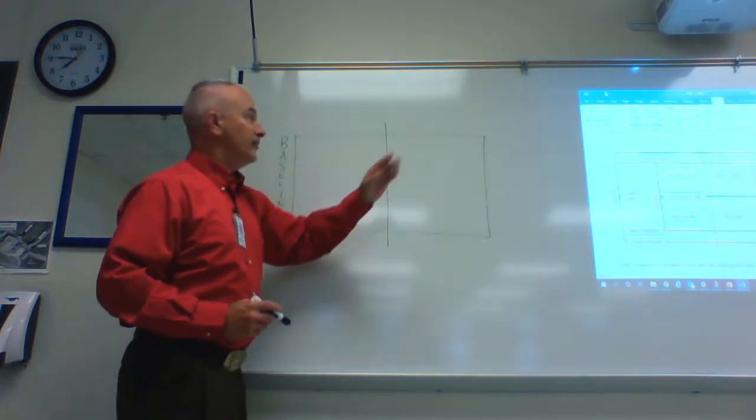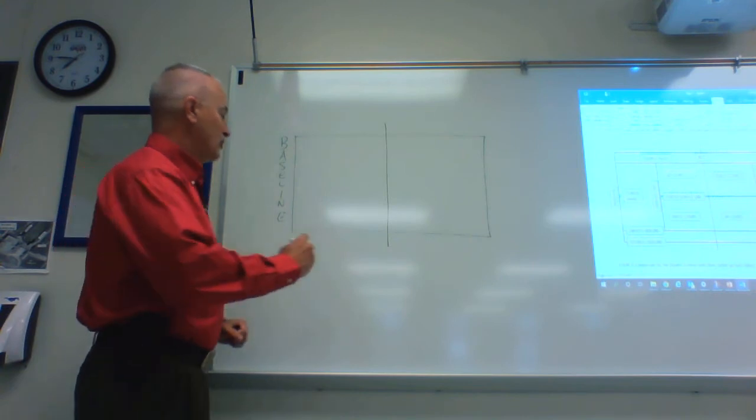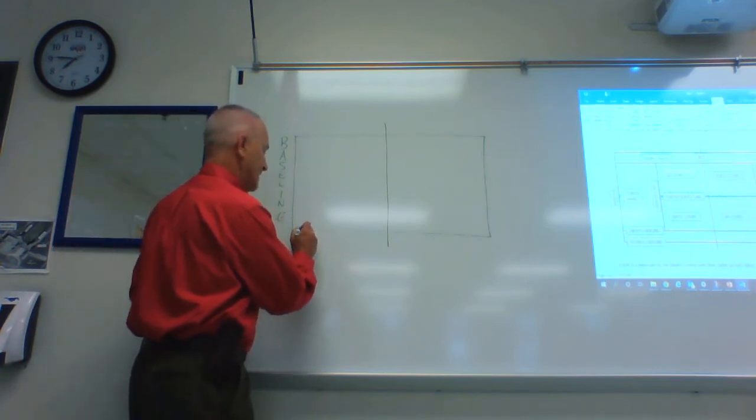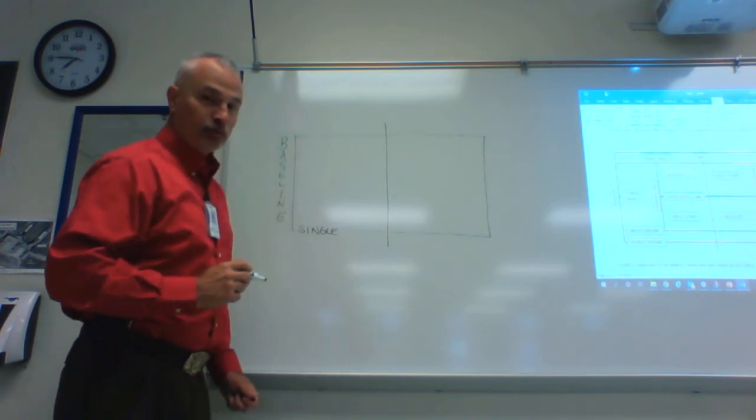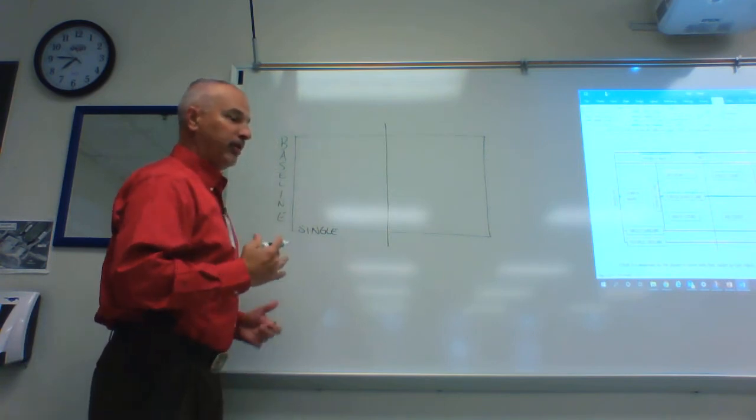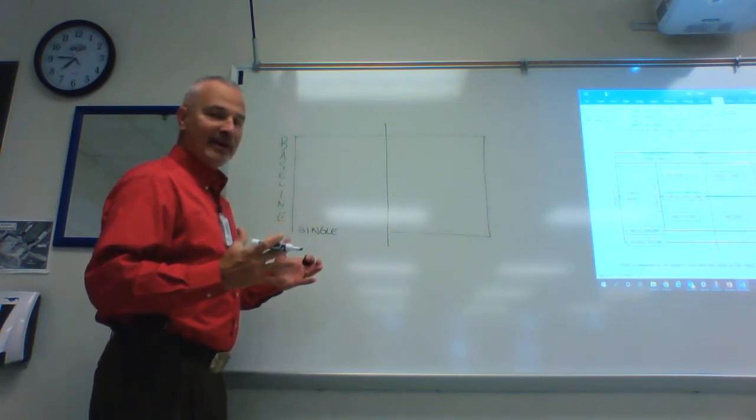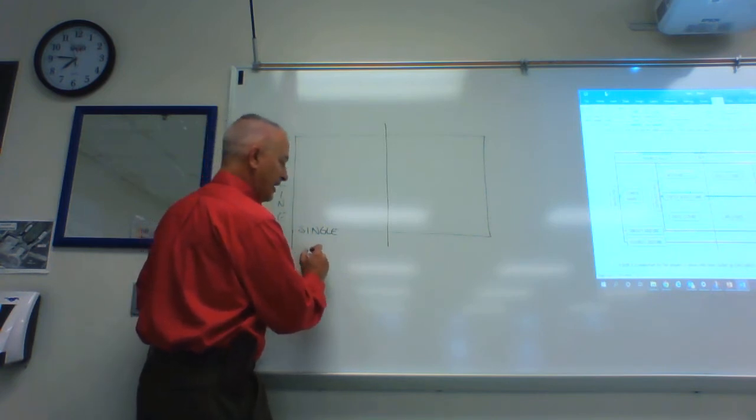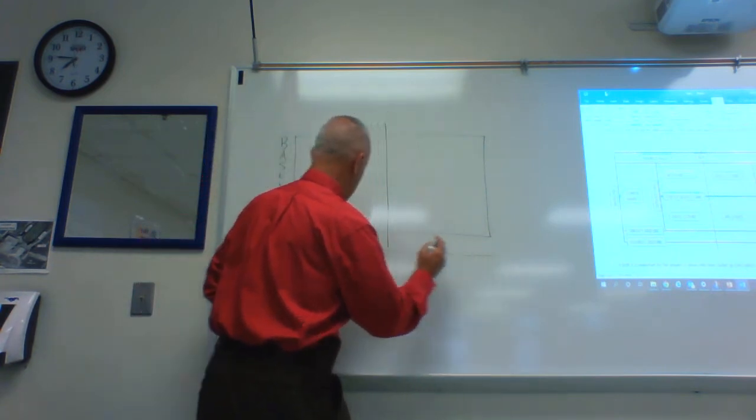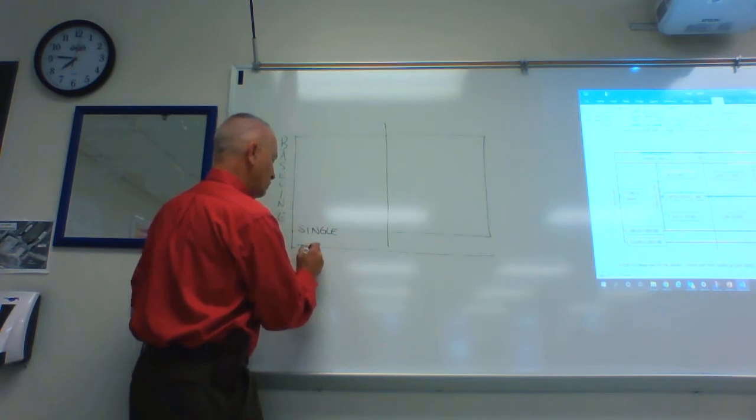These lines, these are called the sidelines. You have a singles sideline, and you also have a doubles sideline. Now, when you're playing doubles, you actually widen the court by six feet, so on this side there's another line that goes out, and this is the doubles sideline.